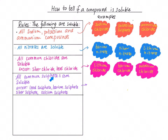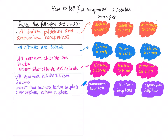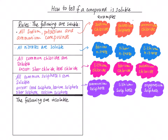The fourth rule is that all common sulfates — compounds ending with the word sulfate — are soluble. There are more exceptions to this rule than for the chloride rule. Lead sulfate, barium sulfate, silver sulfate, and calcium sulfate are all insoluble. Ammonium sulfate and lithium sulfate are soluble because they end in the word sulfate and are not on the exceptions list.